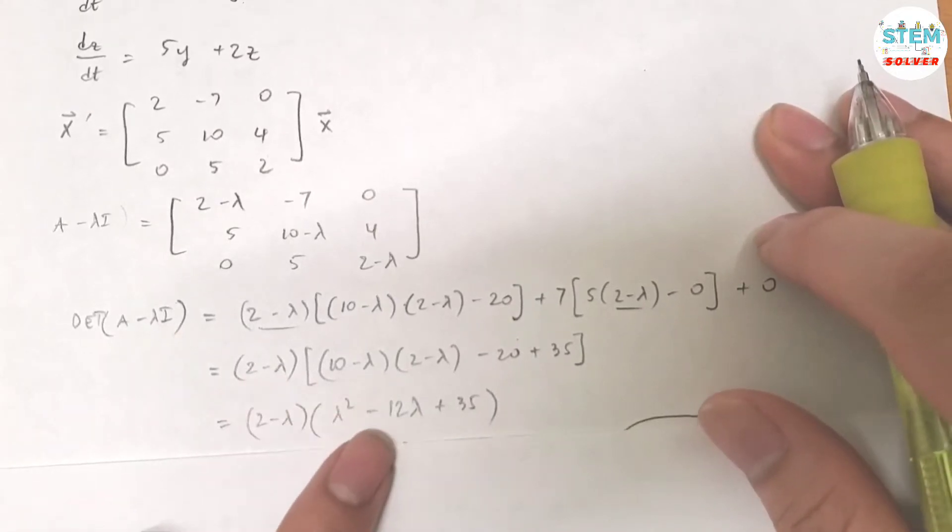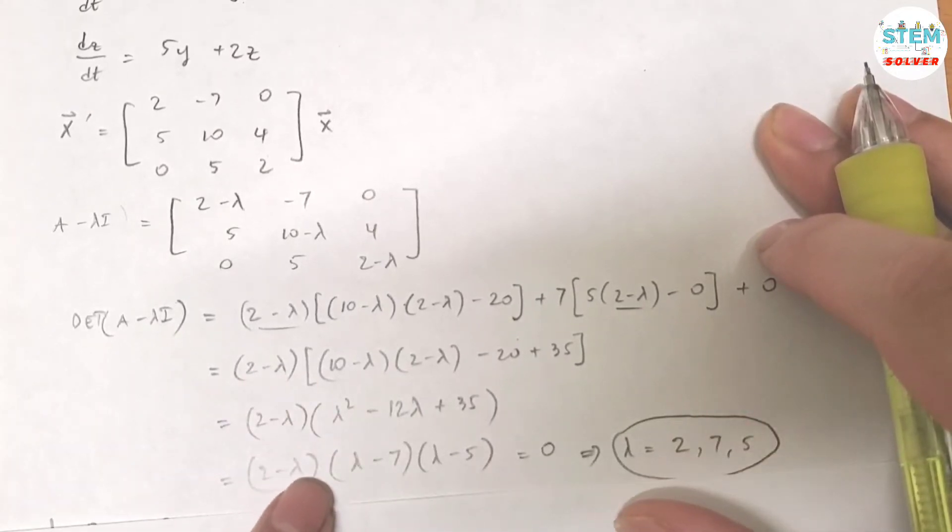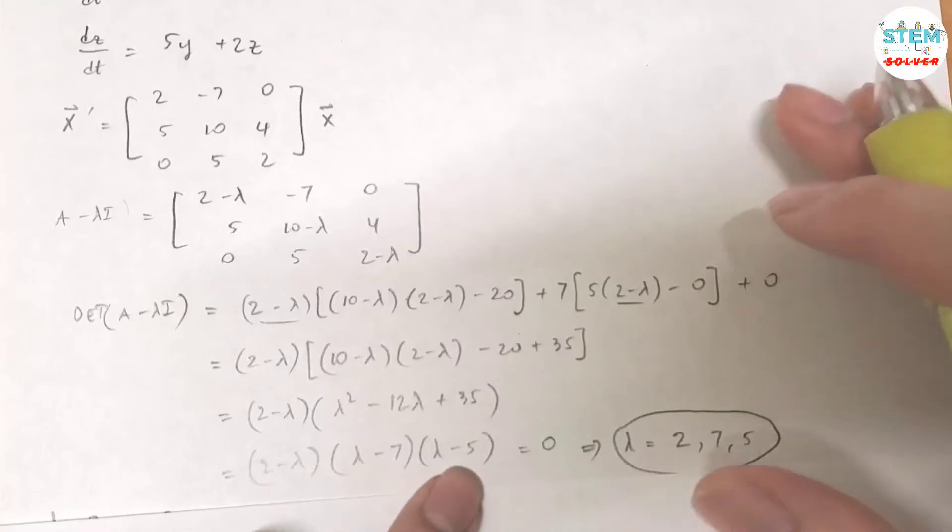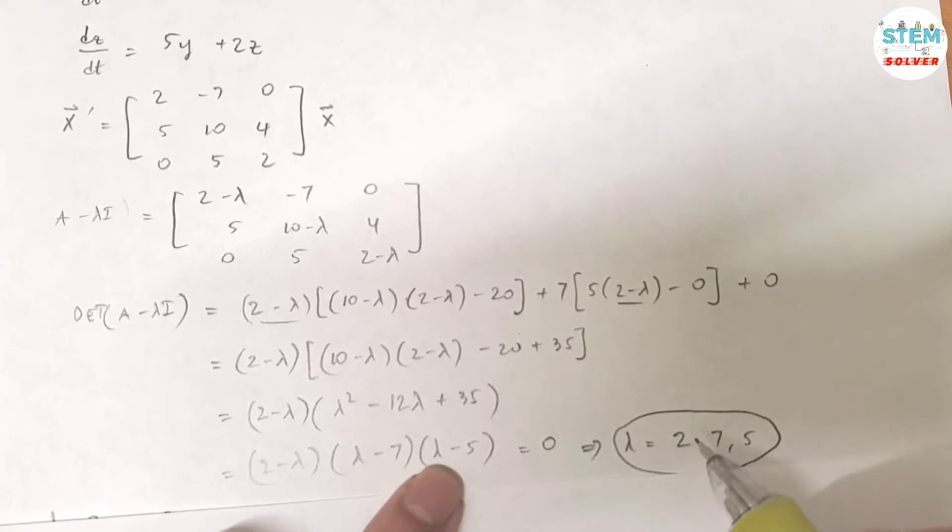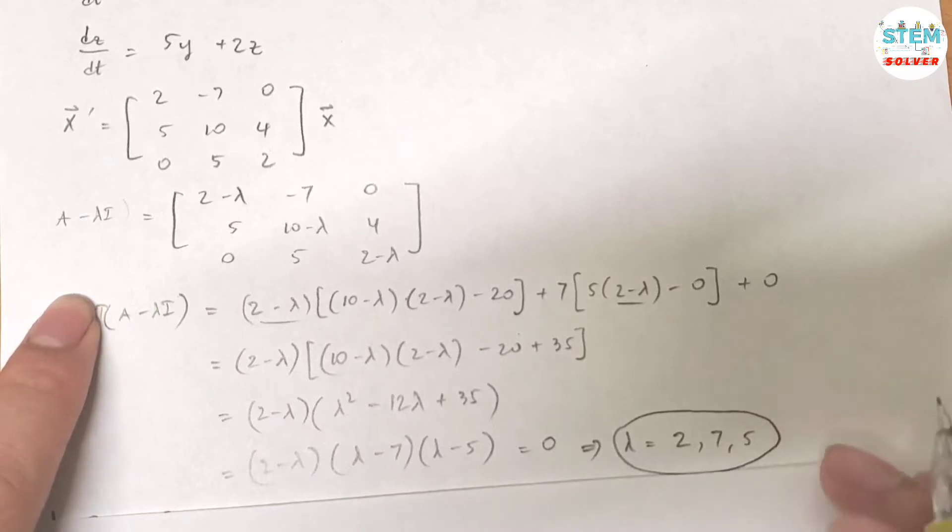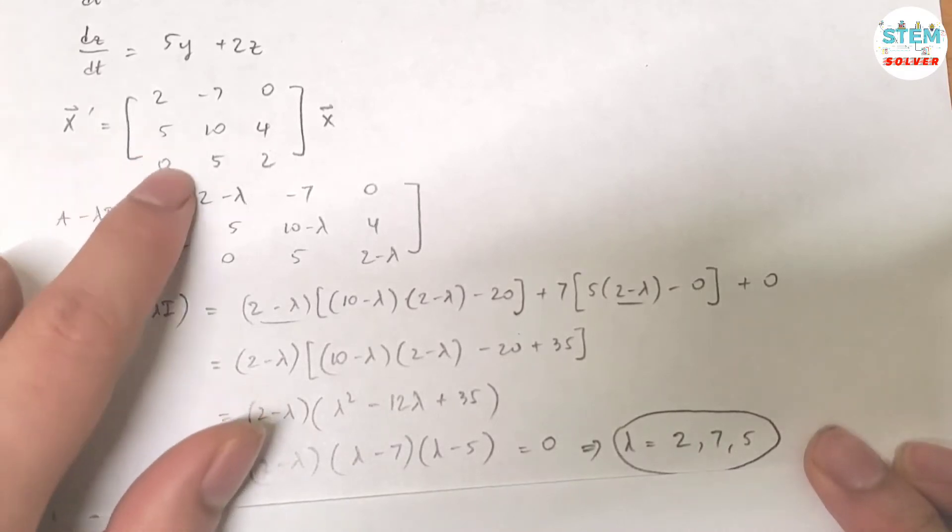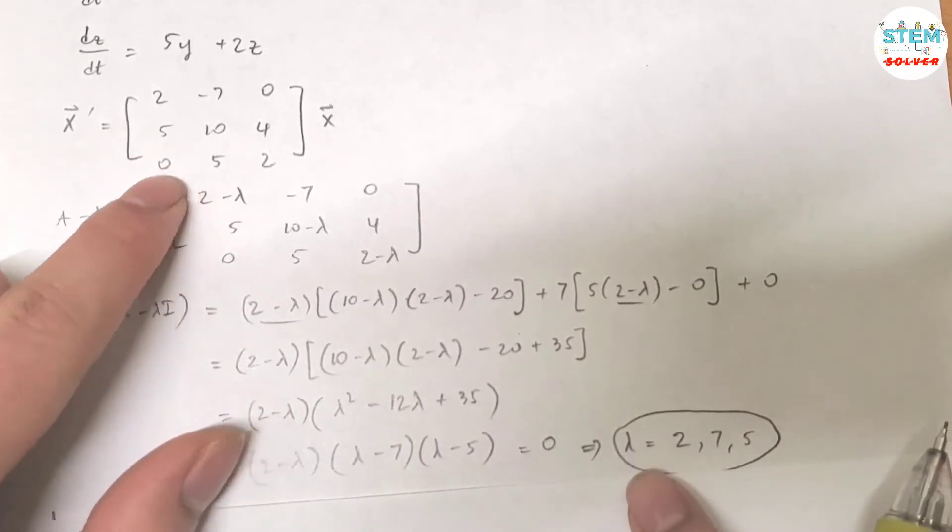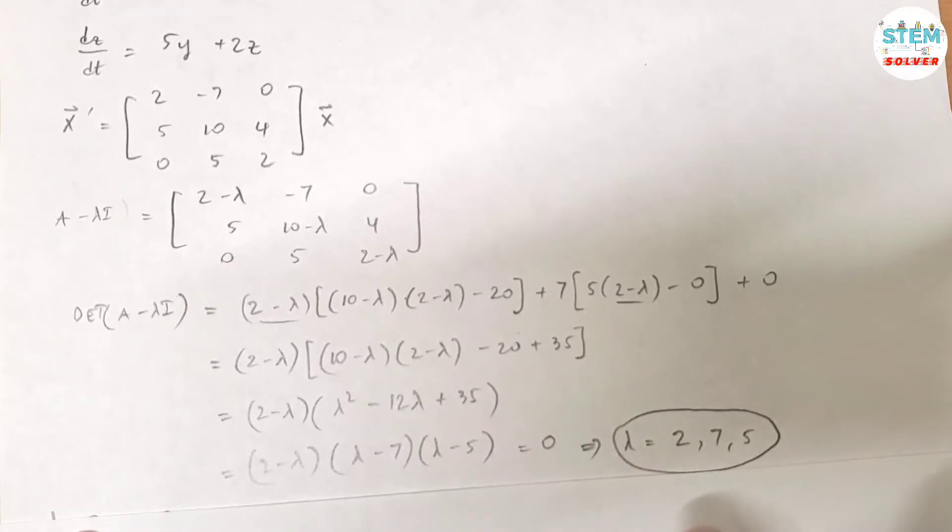So you will get this and then simplify it all the way down here. You will get this. Set it equal to 0 and then solve for lambda. You will get lambda equals to 2, 7, 5. So here is all the eigenvalues for 3x3 matrix. So if you notice you have 3x3 matrix, so you will have 3 values for lambda.